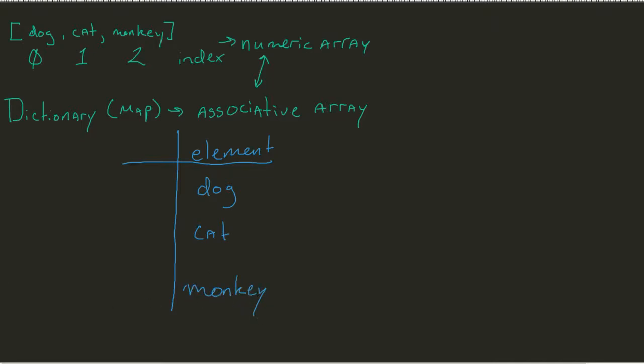And then we came in and we said that we had some index. Now, inside of a traditional numeric array, that index would just be starting from zero: 0, 1, 2.